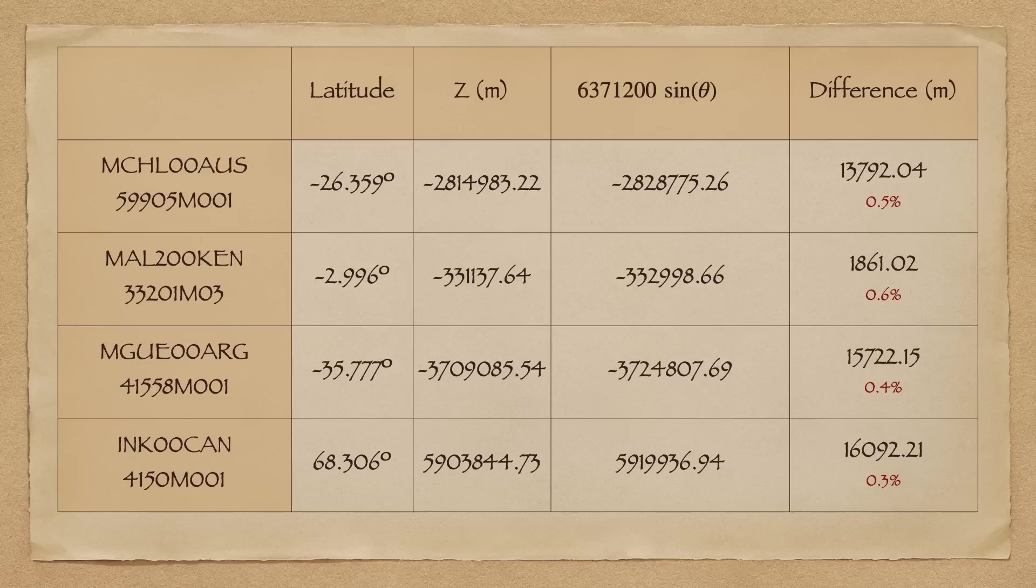In this table, we compare the z value estimated using a very simple spheroidal approximation against the observed z value for each site. We see that the difference between the observed z value and the calculated z value is quite small, at most 20 kilometers or so. At all points, the discrepancy between the two techniques is less than one percent.